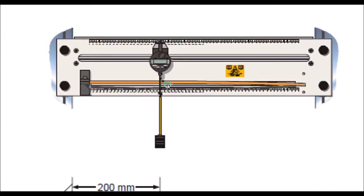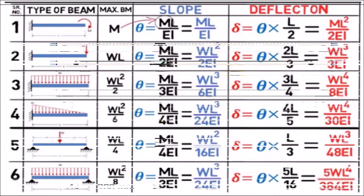For a cantilever beam, using the double integration method, we consider a section XX at any distance from the fixed support. Considering a distance of 200 mm and a section there, using the double integration method or any other method like the area moment method, we can calculate the deflection at that point when load W is applied at the free end.